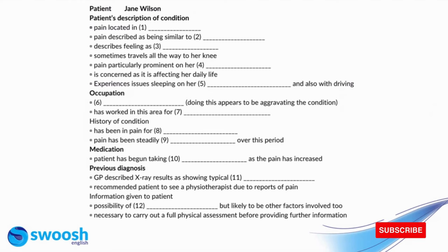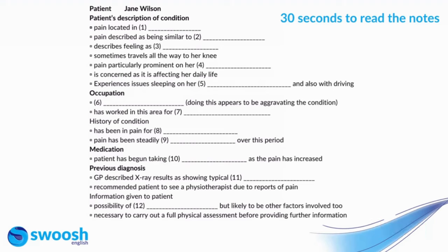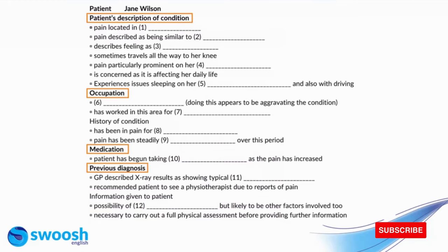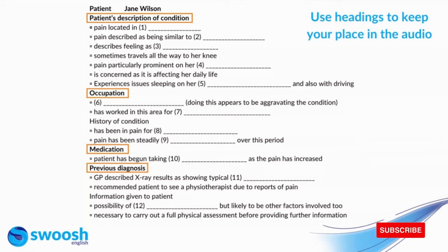Here is our example for OET Listening Part A. You can see you've got your patient notes and 12 gaps that you're going to complete. During the 30 seconds you have to read the notes, there are a few things you're going to do in order to prepare to listen. Firstly, you'll notice that the notes have some headings. These are going to be really useful to help you keep your place in the audio, so if at any point you get lost, you can use those headings to guide you.